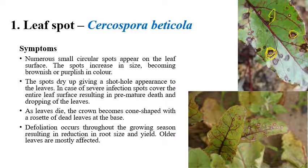In severe stages, the small spots coalesce and shot-hole symptoms can be observed. In very severe cases, premature defoliation and drooping of the leaves can be seen. A cone-shaped rosette of dead leaves can be seen at the base, especially in the upper leaves. The older leaves are mainly affected.